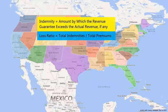The term loss ratio is defined as indemnities divided by total premiums. A loss ratio greater than one implies more indemnities were paid for a given year than were collected in total premium during the same year. Due to the nature of insurance rating, just as loss ratios of less than one are expected, occurrences of loss ratios greater than one are also expected. The goal of any insurance product should be to average out in the long term to a near-one loss ratio.